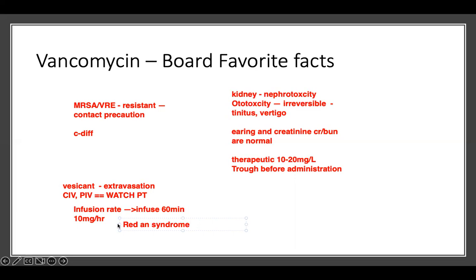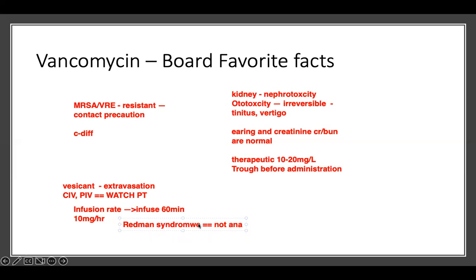Red Man Syndrome — this is very important — this is NOT anaphylactic shock. It happens because the infusion is going too fast. Therefore, you slow down the rate. Don't go too fast. You infuse it at 10 milligrams per hour. If you go faster, the patient develops Red Man Syndrome.